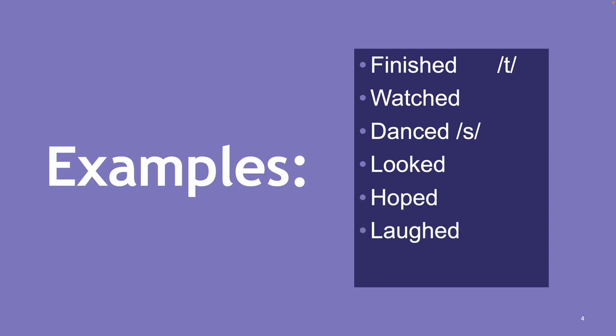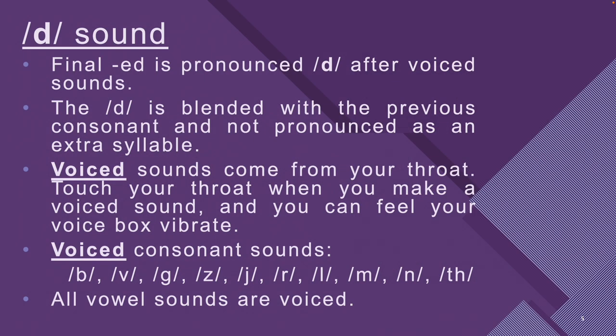How about the next sound, the /d/ sound? Final -ed is pronounced /d/ after voiced sounds. The /d/ is blended with the previous consonant and not pronounced as an extra syllable. Voiced sounds come from your throat. Touch your throat, and when you make a voiced sound, you can feel your voice box vibrate.